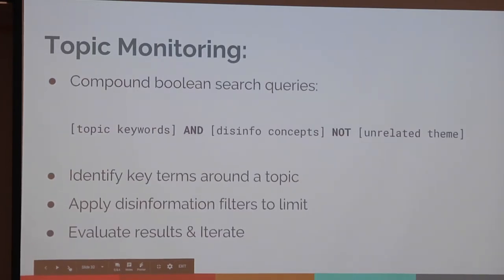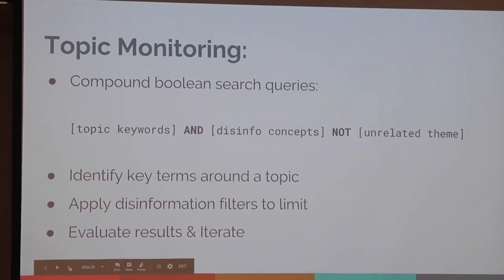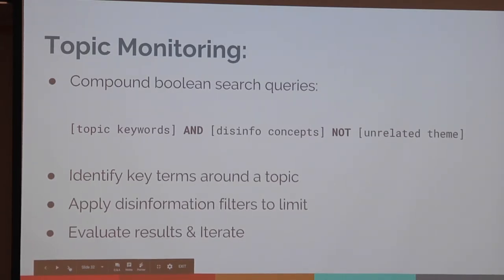How do we do topic monitoring? At the moment this is a pretty basic process. We're developing compound Boolean search queries to identify content we're specifically interested in. We start with broad topic words and then add specific disinformation concepts. For example, Hillary Clinton alone is not something we search for, but 'Hillary Clinton AND Arkancide' — a conspiracy theory about people who have died in relation to Bill and Hillary Clinton — is a disinformation concept we're interested in. We would also exclude terms that generate results we're not interested in. We're iterating on this process and evaluating the results across different platforms to optimize our search queries and filter on sources we've already identified as suspect.